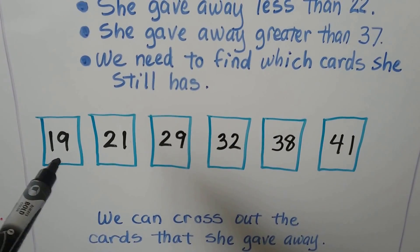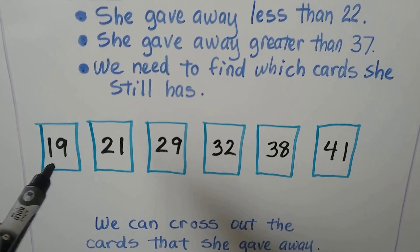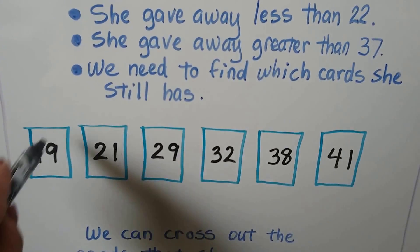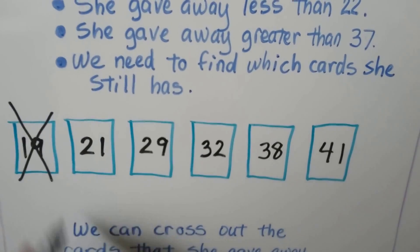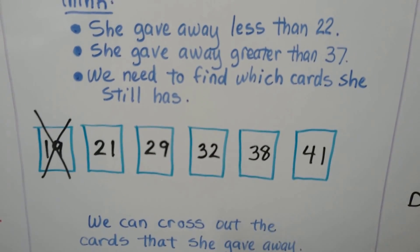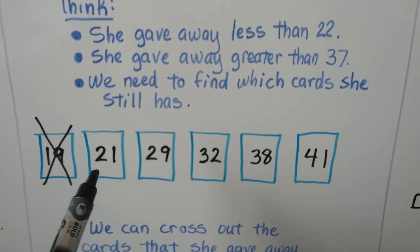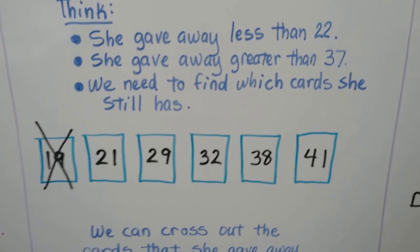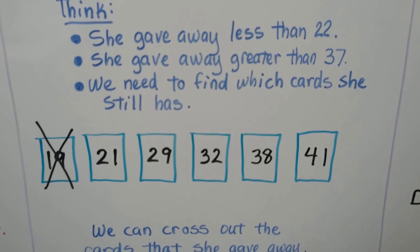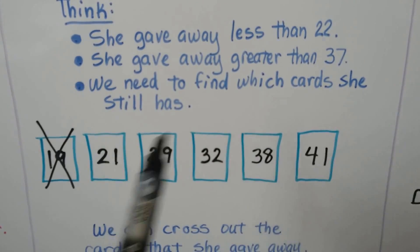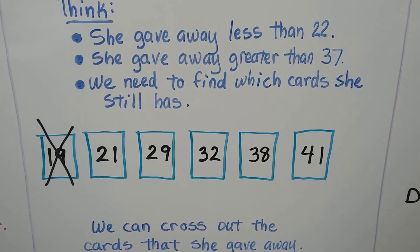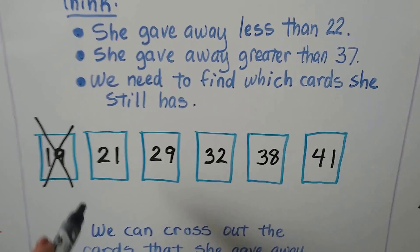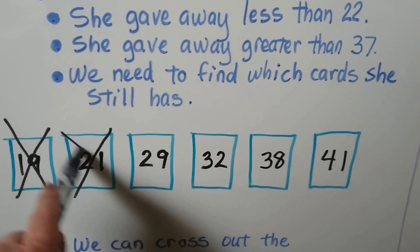Is 19 smaller than 22? Well, 22 has two tens and 19 only has one ten, so yes — that's smaller than 22, so she gave that one away. Is 21 less than 22? They both have two tens, so we look at the ones. 21 has one one and 22 has two ones, so 21 is smaller than 22 — we can cross this out. She gave that one away.